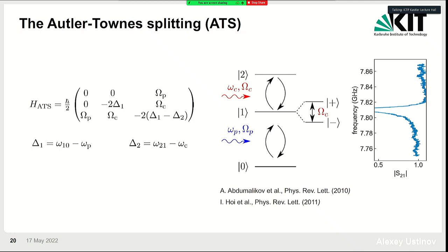A second quantum behavior well known in atomic physics is the Autler-Townes splitting. If you have three levels in your quantum system, you can drive the transition between the first and second excited states and then probe the zero-to-one transition as a function of the amplitude or power of the drive tone applied at the one-to-two transition. This is described in the rotating wave frame by a corresponding Hamiltonian: the driving tone dresses the first excited state, creating a splitting omega_c proportional to the drive field amplitude.